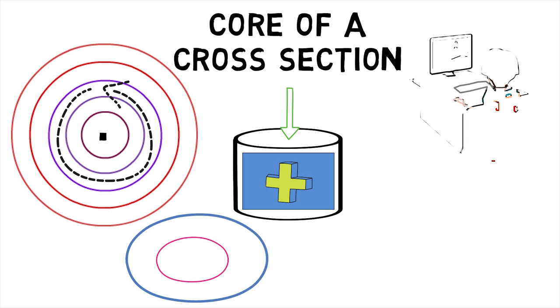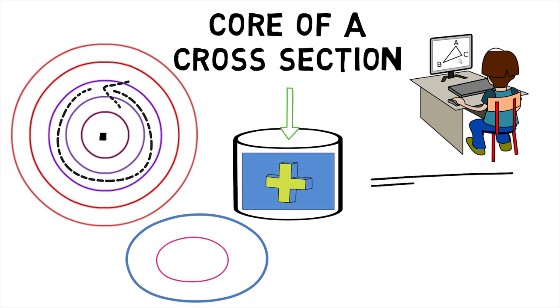The determination of the core of a cross-section is especially important in the designing of rods made of materials that have different tensile and compressive strengths.